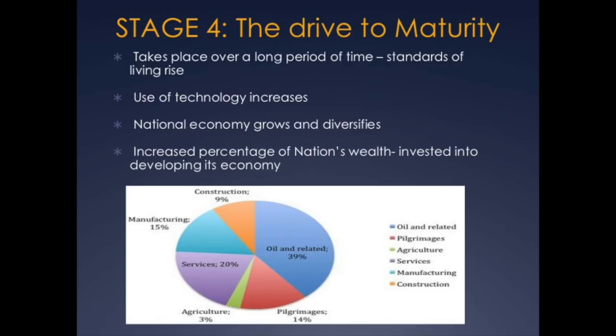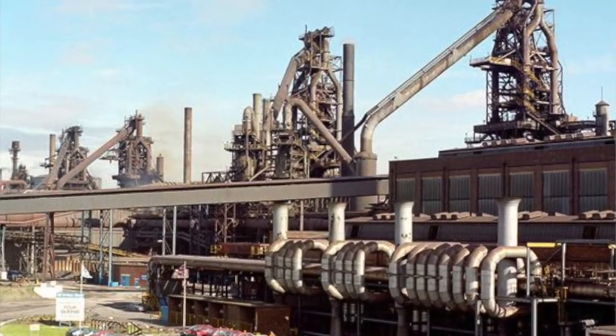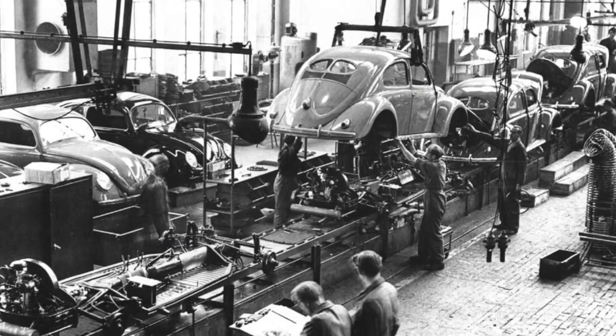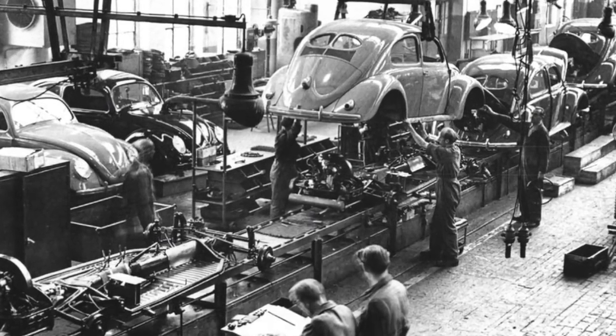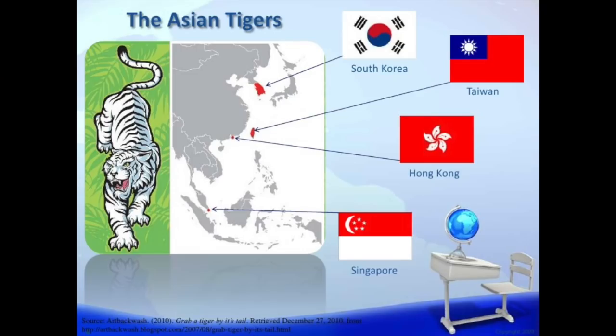The fourth stage of Rostow's model is called drive to maturity. This is where urbanization is really becoming a fundamental part of society. Factories are well settled in, and technology is starting to diffuse into factories and throughout society. Innovation is becoming the key — how do you make something quicker, faster, and cheaper? The United States from the 1920s to the 1960s would be here. Today we would see South Korea and the other Asian tigers in this part of the model.